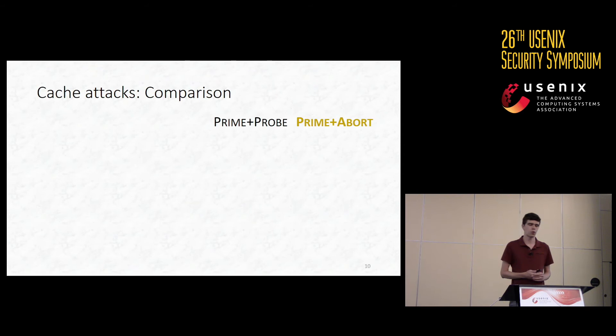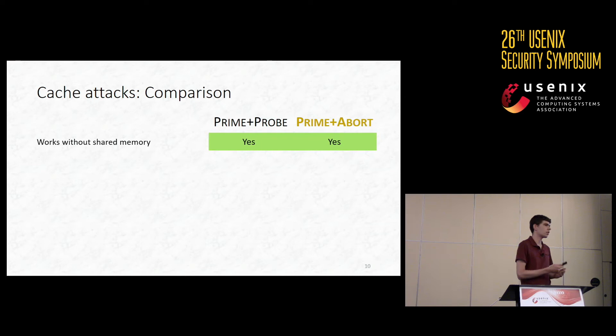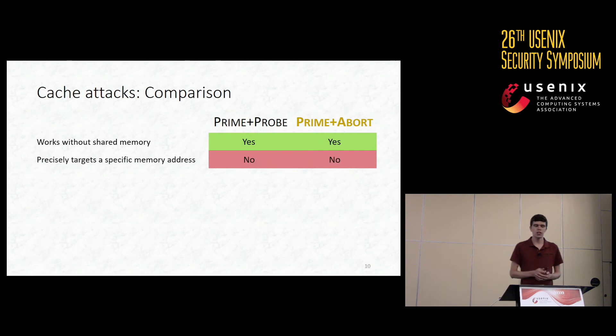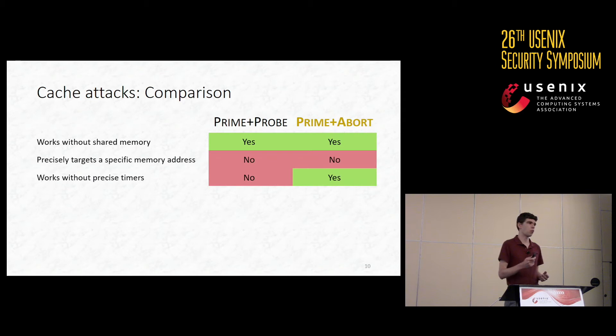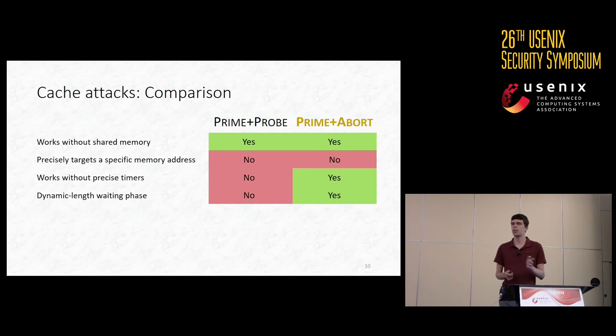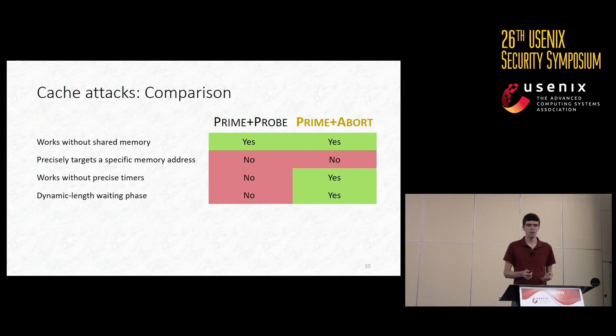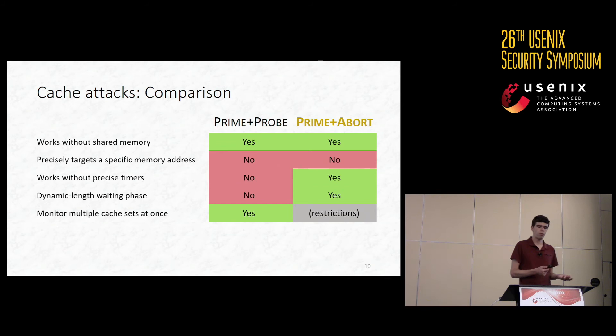As soon as control flow hits our abort handler, we will instantly know that a victim access has occurred. This means the transactional abort mechanism is actually acting as a fast hardware callback telling us when the victim has accessed our targeted cache set. Once the transaction aborts, we can start a new transaction, re-prime the targeted cache set, and begin waiting for the next victim access. Not only were we able to cut our waiting phase short when the victim access occurred, but we can also extend our waiting phase essentially indefinitely — we don't have to keep continuously probing our cache set over and over like we do with Prime and Probe. This is why we call our attack Prime and Abort: the abort replaces the probe step.